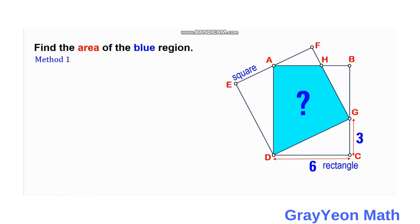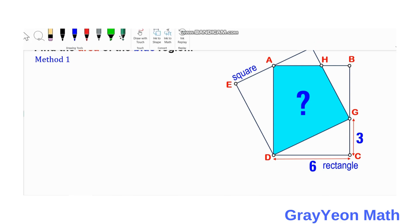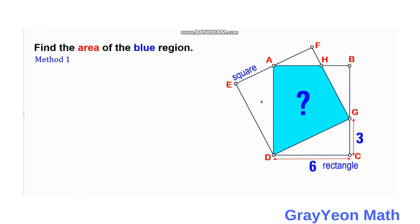For our first method, we consider the square EFGD and we subtract — we deduct — these two triangles: triangle EAD and triangle AFH.